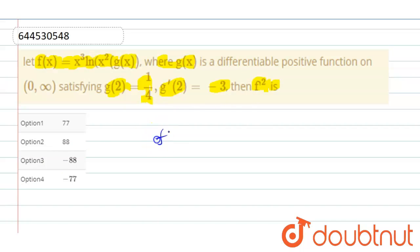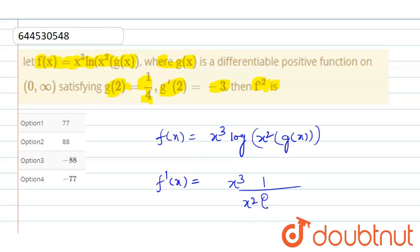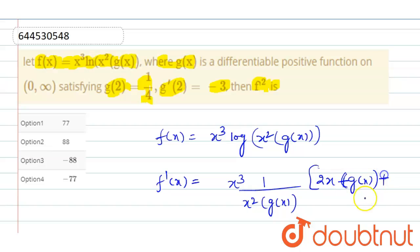So f(x) equals x³ · log(x²) · g(x). To find f'(x), we apply the UV (product rule) form. Differentiating, we get x³ divided by x — since the derivative of log(x) is 1/x — multiplied by x² · g(x). Again differentiating using the UV form, we get 2x + 2x + 2x into g(x) plus x² into g'(x).